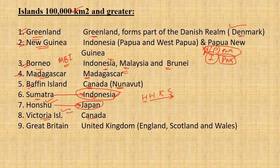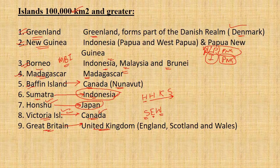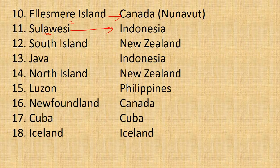The eighth is Victoria Island of Canada. In Canada, we also have Baffin Island. The island of Great Britain has three parts: Scotland, England, and Wales — this is the United Kingdom. The third largest island of Canada is Ellesmere Island. Sulawesi belongs to Indonesia, as do Sumatra and New Guinea.